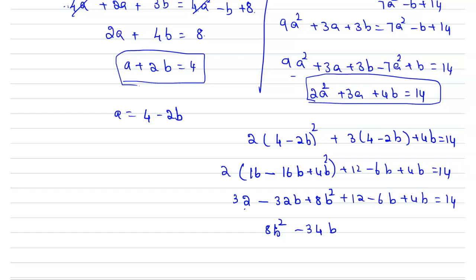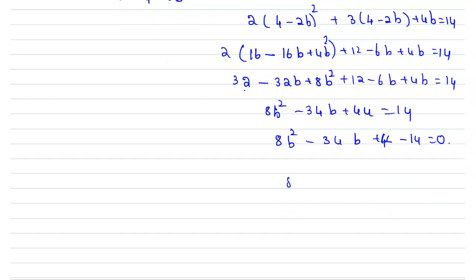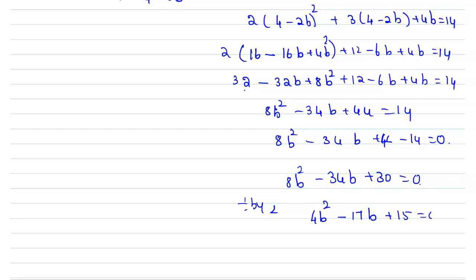Collecting terms: 8b² - 34b + 44 = 14, so 8b² - 34b + 30 = 0. Dividing throughout by 2 gives 4b² - 17b + 15 = 0.